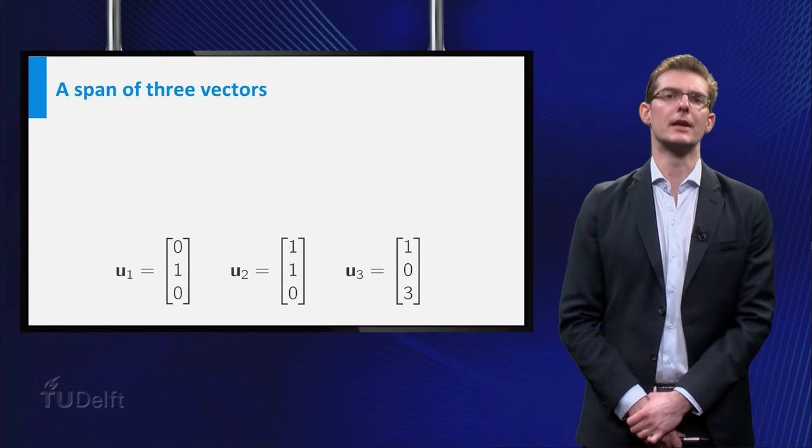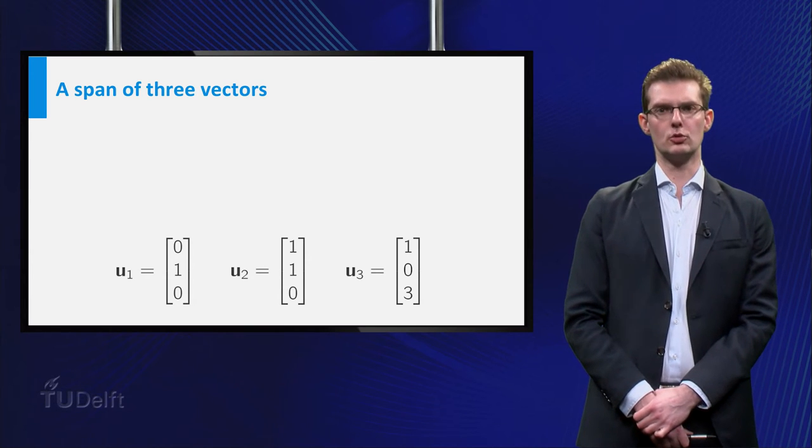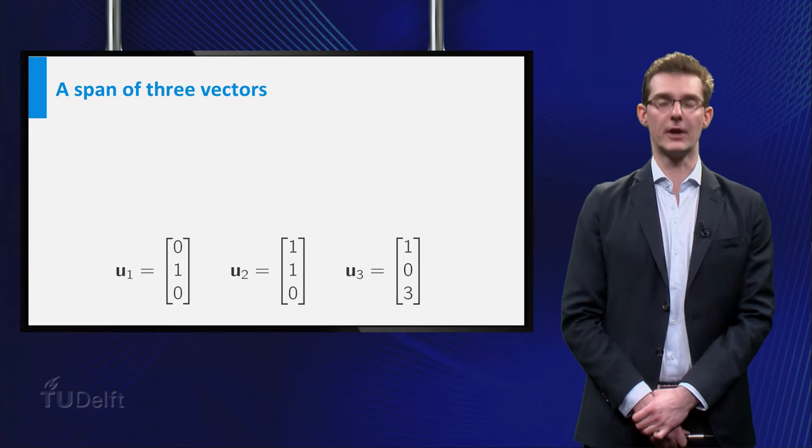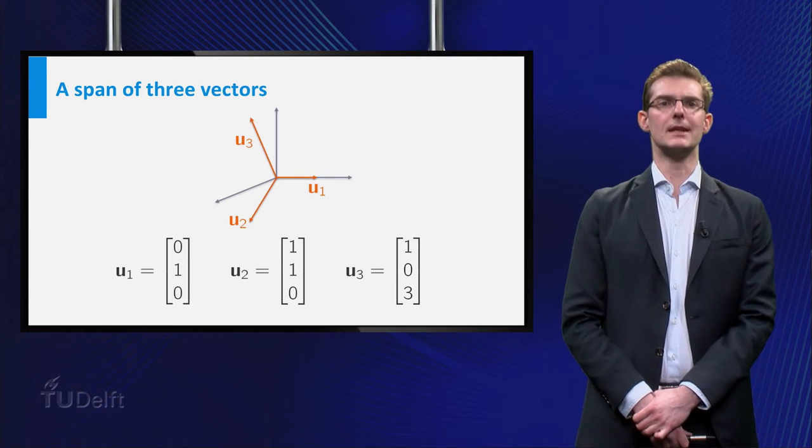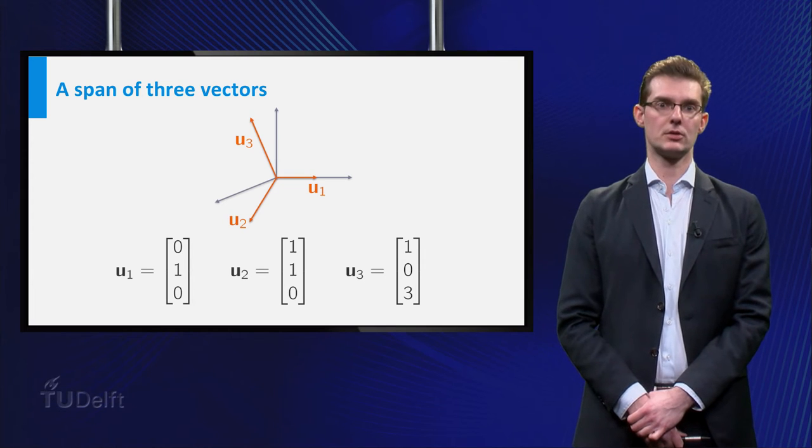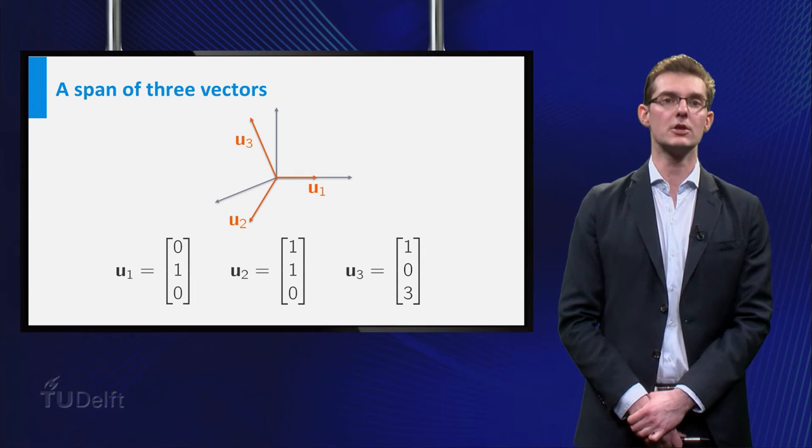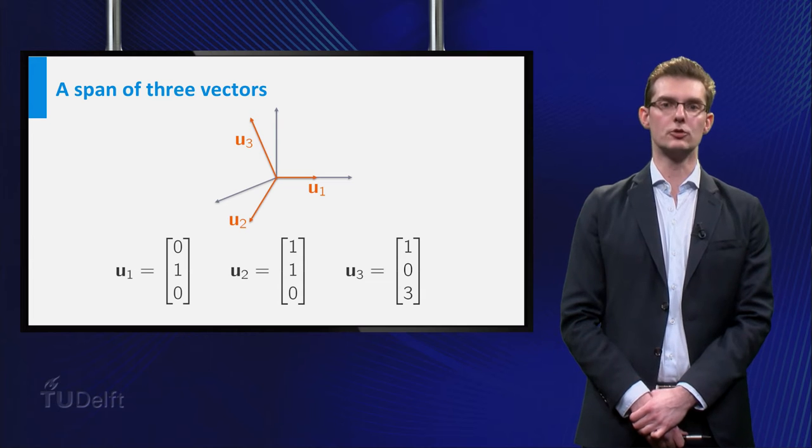Let's start by taking a look at these three vectors, U1, U2, and U3. Here you see the same vectors drawn in R3. The span of these vectors is the entire three-dimensional space. This means that each vector can be written as a linear combination of U1, U2, and U3.